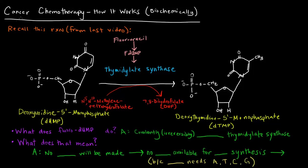In this video, I want to talk about a form of cancer chemotherapy and how it works biochemically. Recalling from the last video, we had the reaction taking deoxyuridine 5'-monophosphate (dUMP) to dTMP. This reaction is catalyzed by thymidylate synthase, which takes a U nucleotide and turns it into a T nucleotide. This deoxy-T nucleotide can later be used to make DNA.